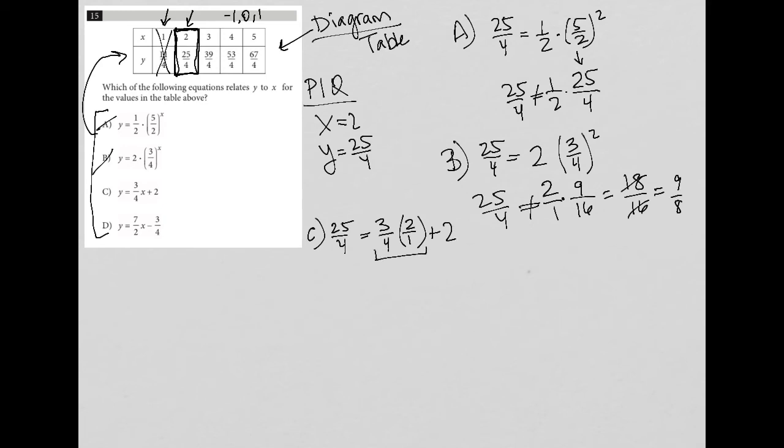Whenever I'm adding fractions, I have to have a common denominator. So I'm going to multiply top and bottom here by 4, leaving this to be 6 over 4 plus 8 over 4, which is equal to 14 over 4. And again, 25 over 4 does not equal 14 over 4. So C is gone.